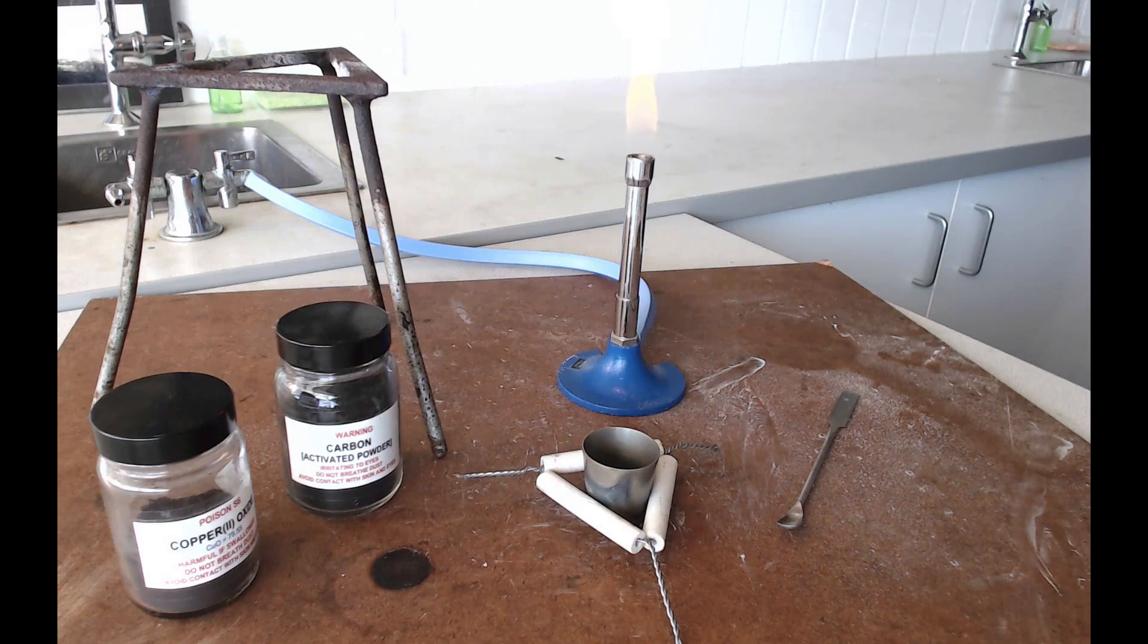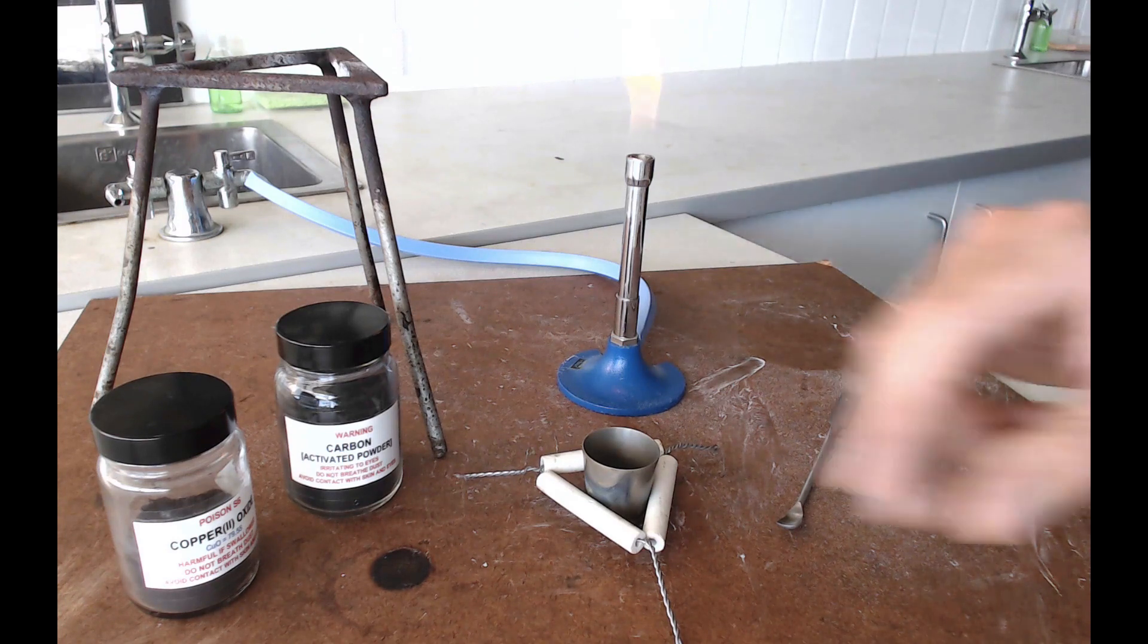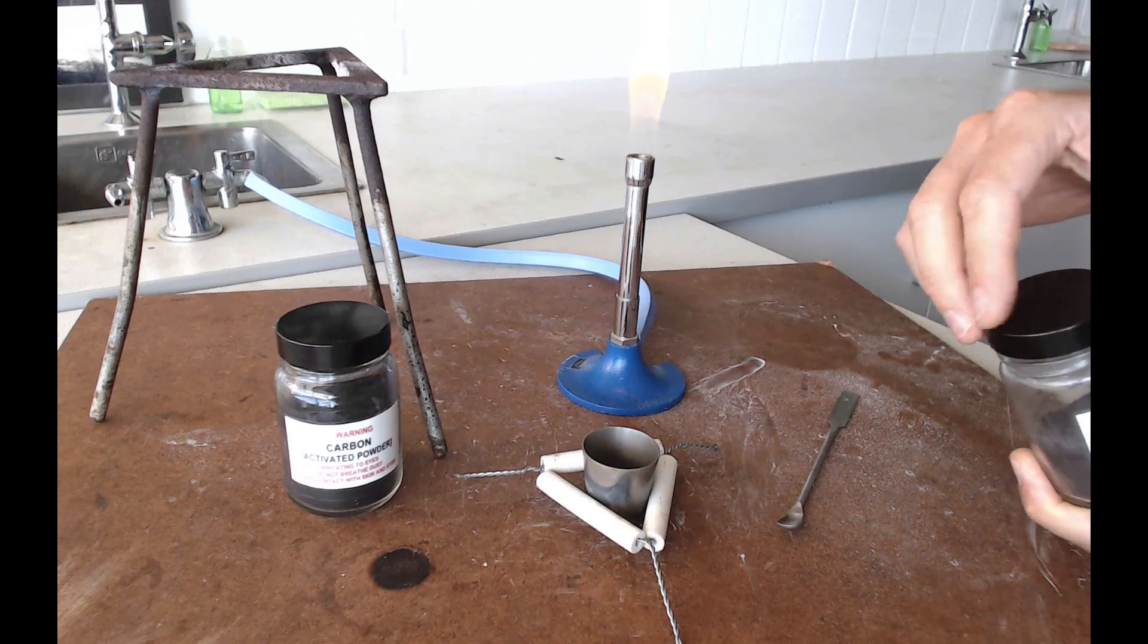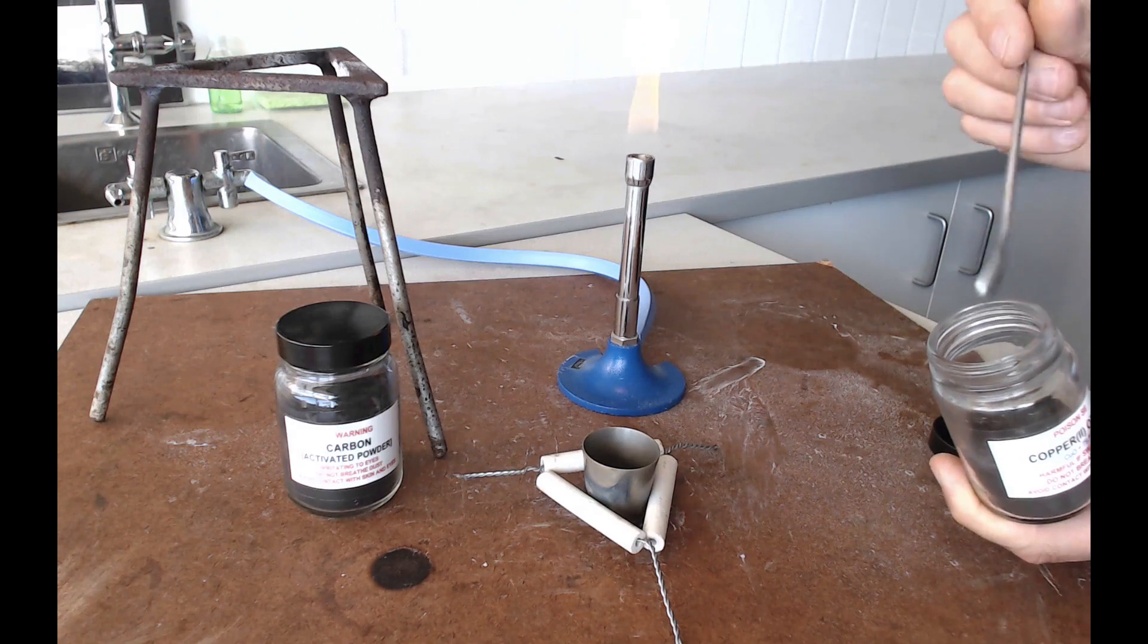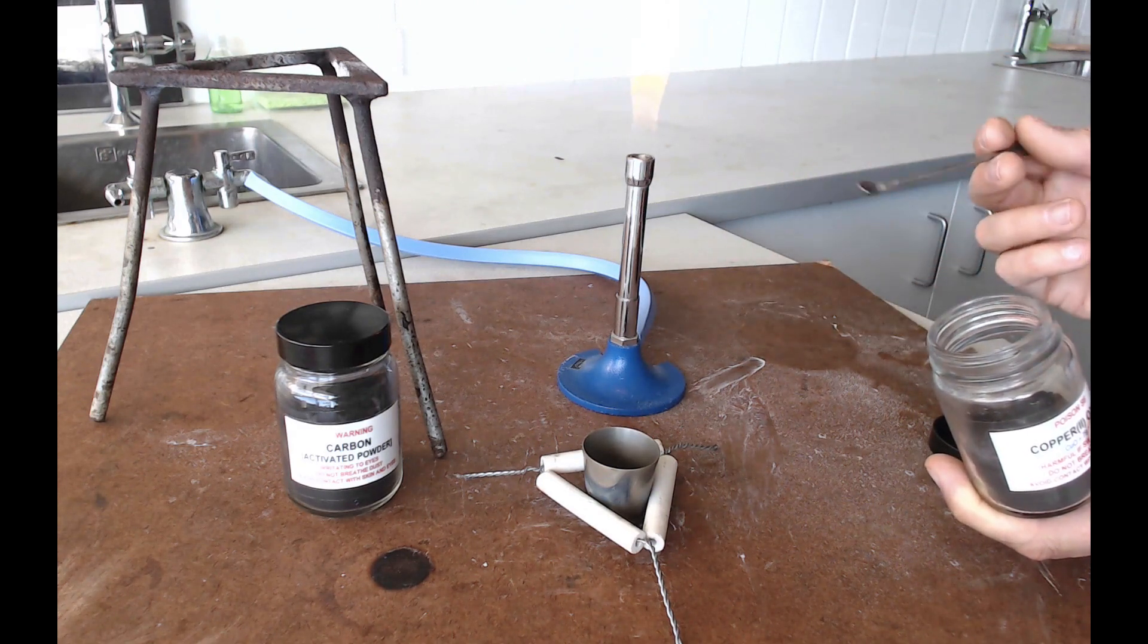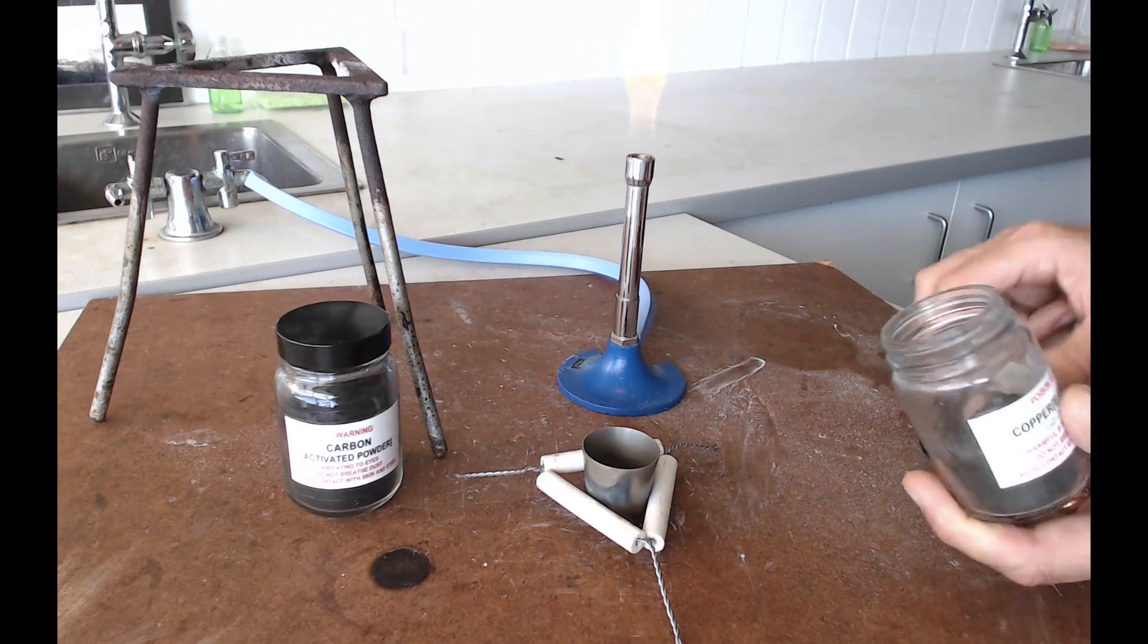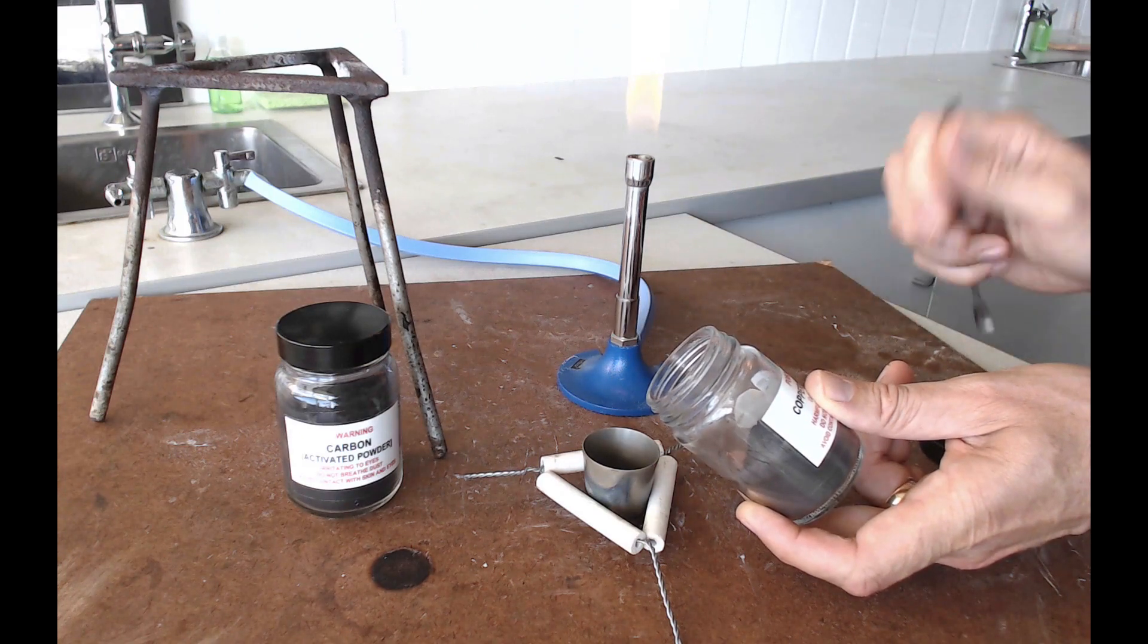Now the first thing you need to do is put roughly equal amounts of these two powders into your crucible. Be a little bit careful when you're doing this. If you're transferring the solid from a jar which is far away from the crucible then you're likely to spill some of it and these solids are quite annoying to have to tidy up afterwards because they make quite a mess and they're quite difficult to clean up. So try and make sure that your jar is nice and close to the crucible because then if something falls off your spatula it's likely to fall into your crucible.